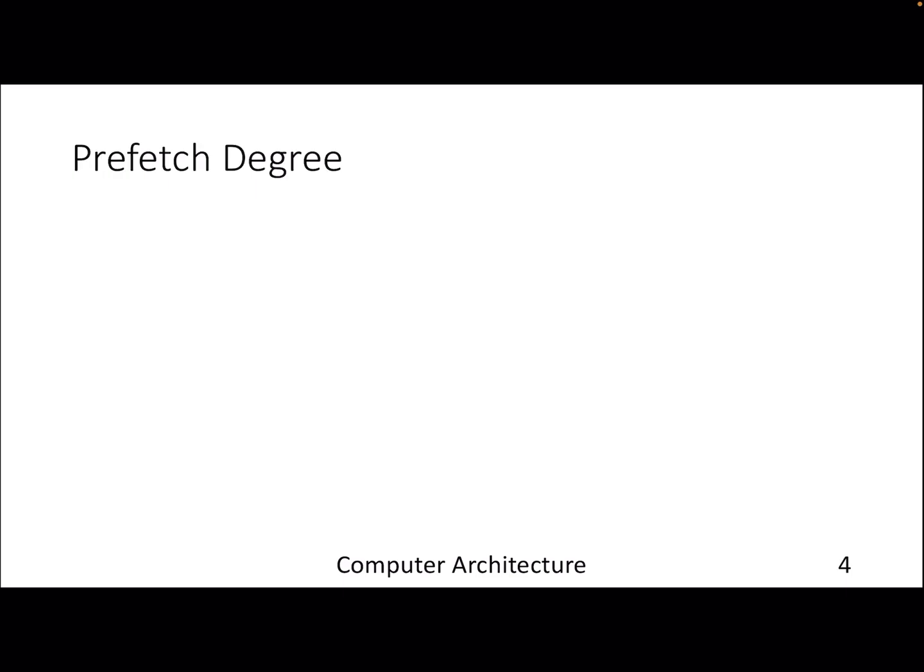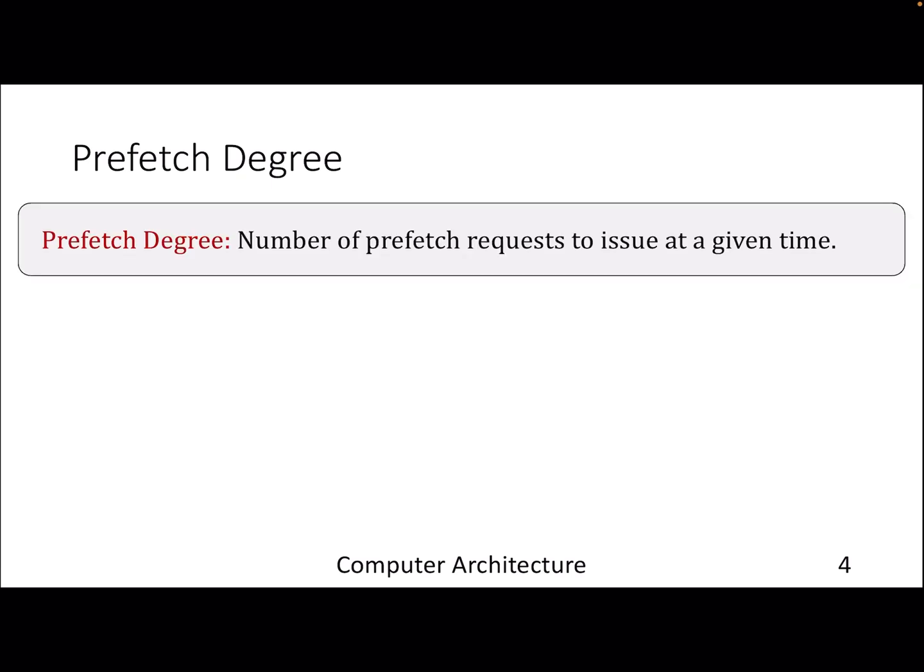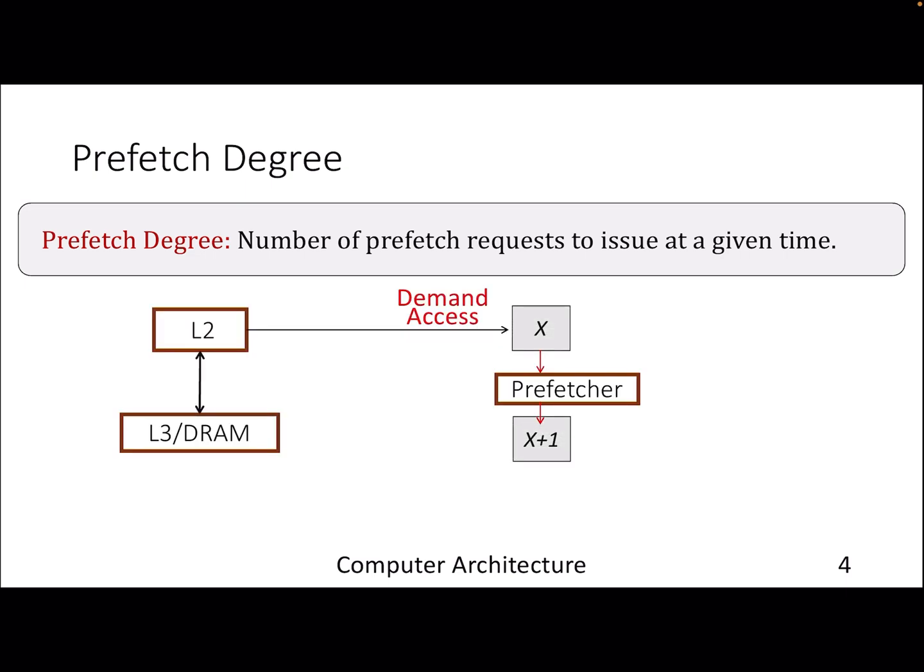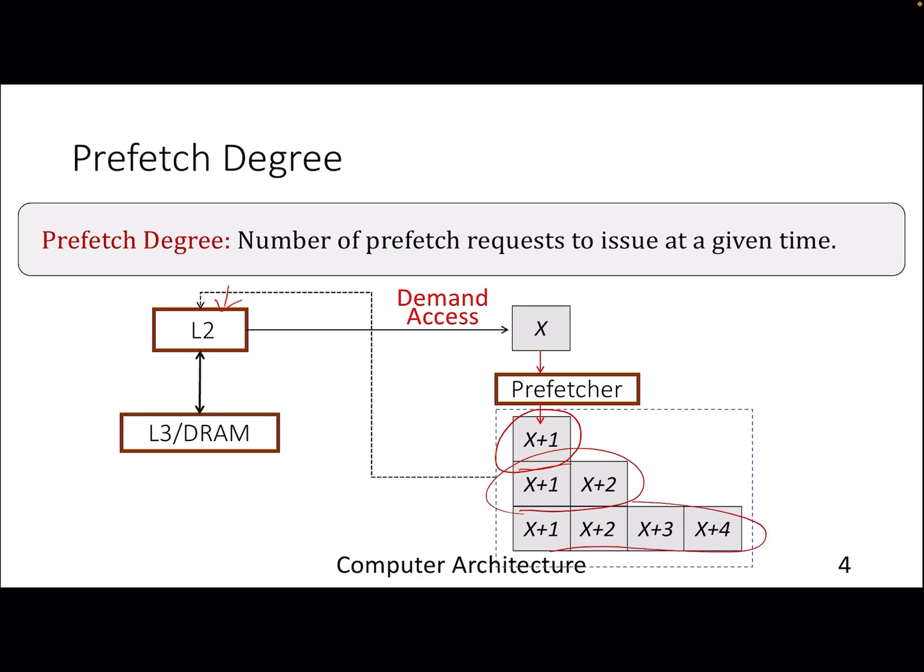A few knobs of interest: whenever we talk about prefetching, the first thing that comes to our mind is how many prefetch requests to generate at a given point of time, and that is known as the prefetch degree. For example, if you get a demand address x and you prefetch only x+1, then the degree is one because you are prefetching only one address at a time. Instead if you go for two or four, then the degree will become two or four.